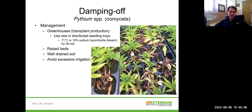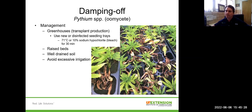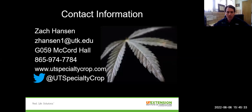Damping off is typically a seedling disease, sometimes caused by inadequate sanitation. Make sure you're starting with clean or new seedling trays — if you're reusing them, clean with a 10% bleach solution. In the field, raised beds and well-drained soil will help, as damping off is often worsened by excessive soil saturation. That's all I have on diseases. Feel free to reach out to me or your county extension agent if you have any questions regarding hemp disease management. Thank you for watching.